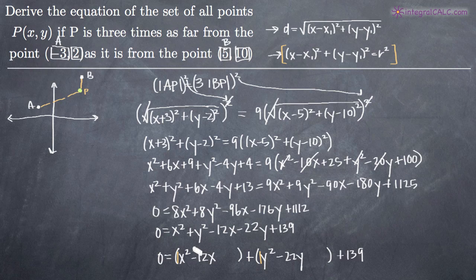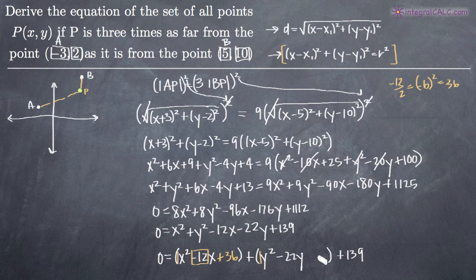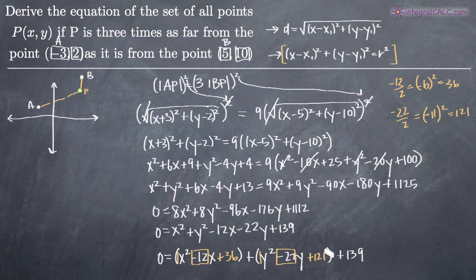We take the coefficient on the first degree x term, which is negative twelve. Negative twelve divided by two gives us negative six, and squaring that gives us thirty-six. So we add thirty-six to the x group. For the y variables, we take negative twenty-two, divide by two to get negative eleven, then square it to get positive one hundred and twenty-one. So we add one hundred and twenty-one to the y group.